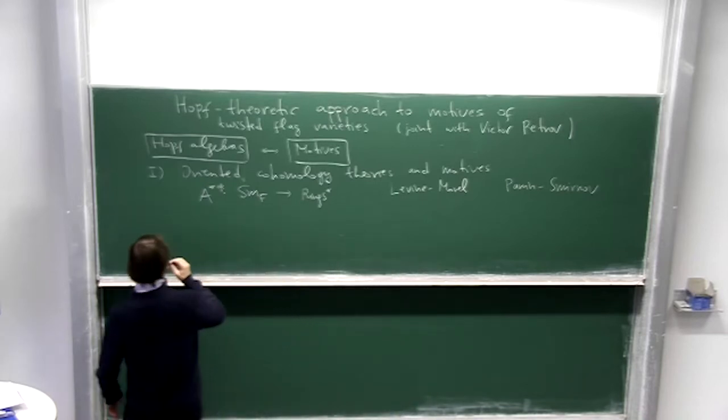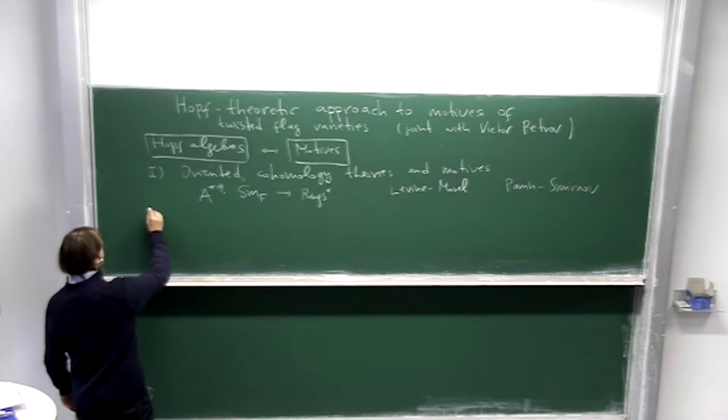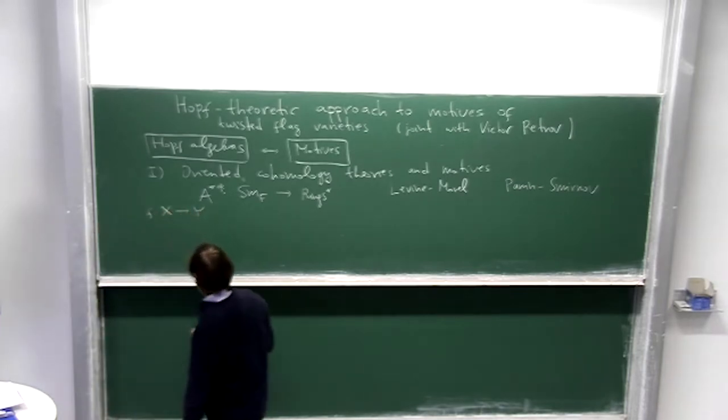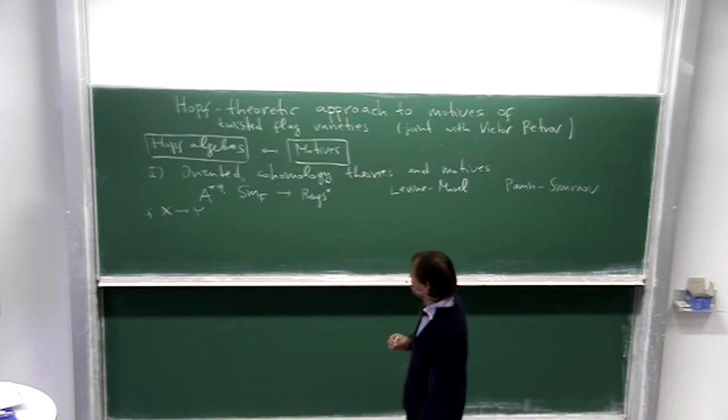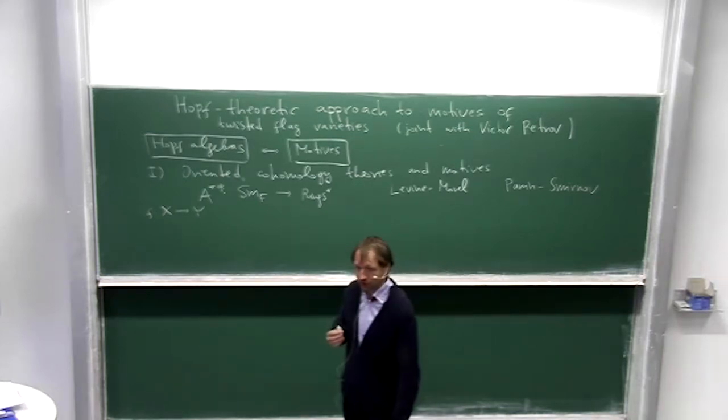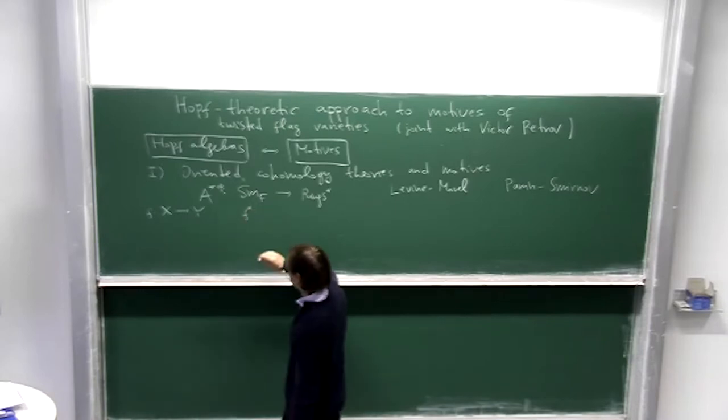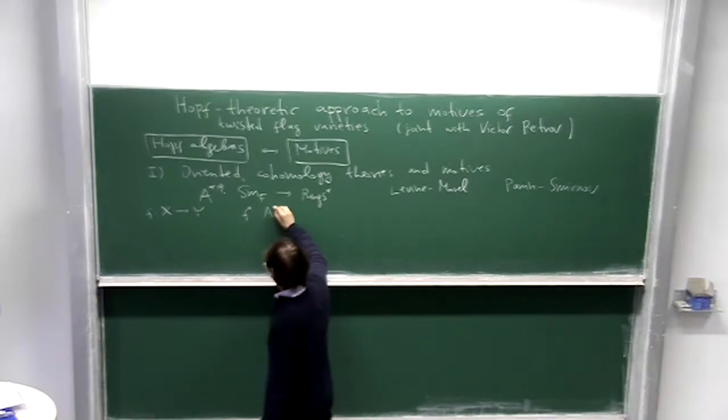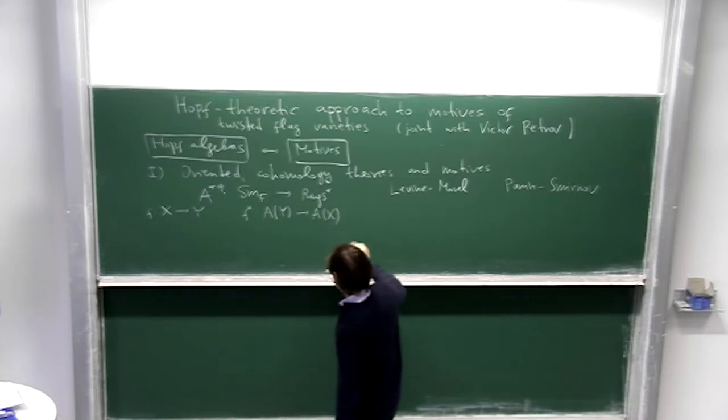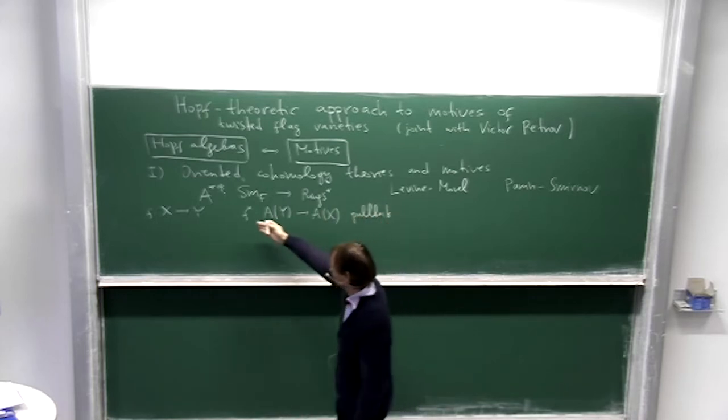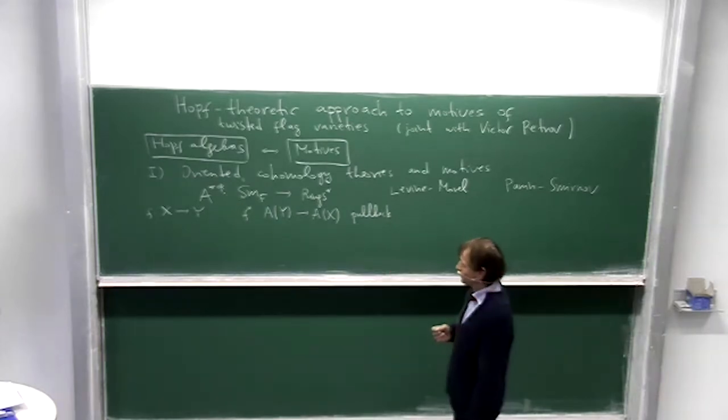So for example, if we have a morphism of two varieties from X to Y, then by definition we have a map which I denote as f star from A of Y to A of X in the opposite direction. This is a contravariant functor.